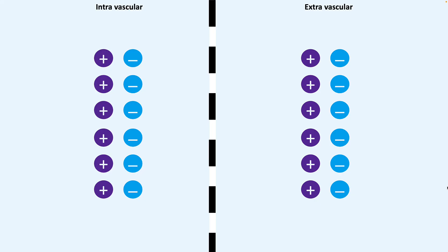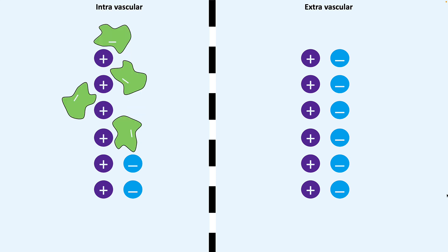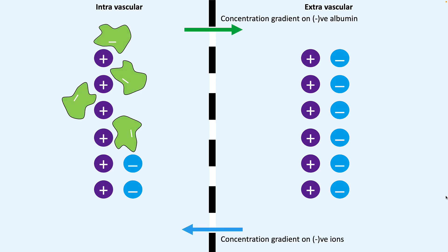Let's say you've got intra and extra vessel compartments with positive and negative ions — positive ions are sodium, negatives are chloride. Let's replace some of these negative ions with negatively charged protein, that is albumin. When you do so, both sides will be electrically neutral. However, there will be a concentration gradient for albumin to move towards the right side and a concentration gradient of your negative chloride ions to move to the left side.